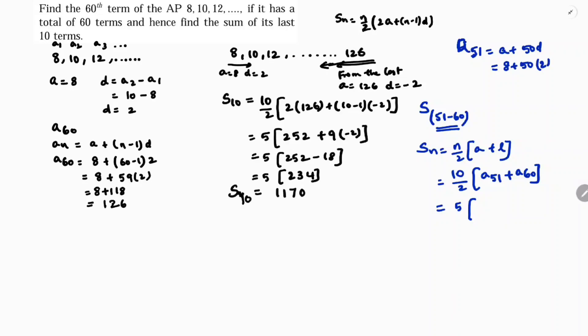So it is 108 plus 126. So 5 times 234 which is 1170.